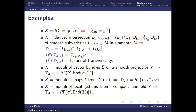The tangent complex of the derived intersection has two pieces: one in homological degree zero and one in homological degree one. These are the direct sum of the tangent spaces to the smooth subvarieties, and the tangent space to the ambient variety respectively. The degree zero cohomology of the tangent complex is the Zariski tangent space to the intersection, and the degree one cohomology measures the failure of transversality of the intersection.